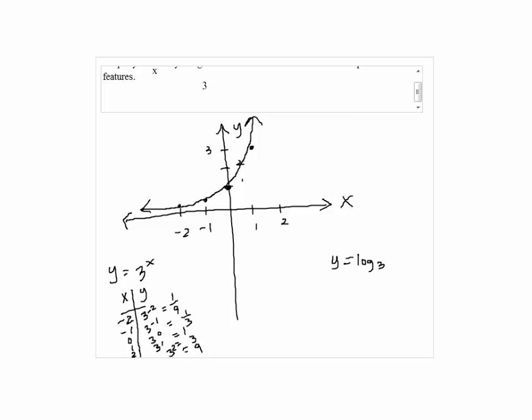Now, for Y equals log base 3 X, you can choose points for X and find Y to plot points. So, for example, when X equals 1, log base 3 of 1 will be 0, so Y equals 0.